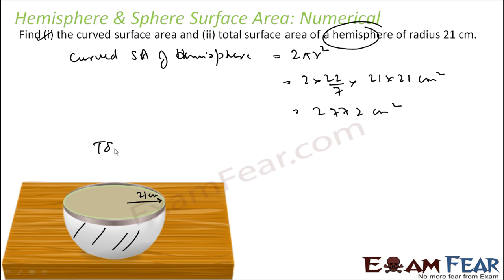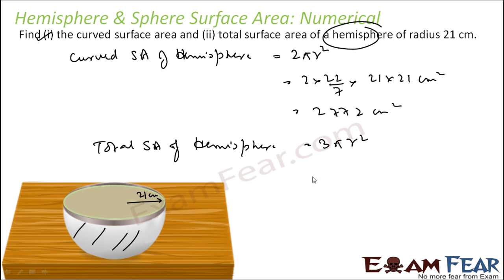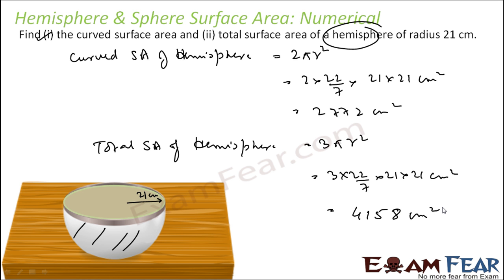If we want to find the total surface area of the hemisphere, that will be 3πr², because it is 2πr² plus the base area. That is 3 × (22/7) × 21 × 21 = 4158 cm². So we can easily find the total surface area and the curved surface area of a hemisphere.